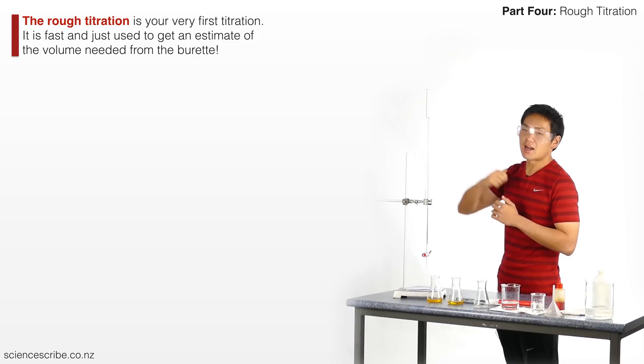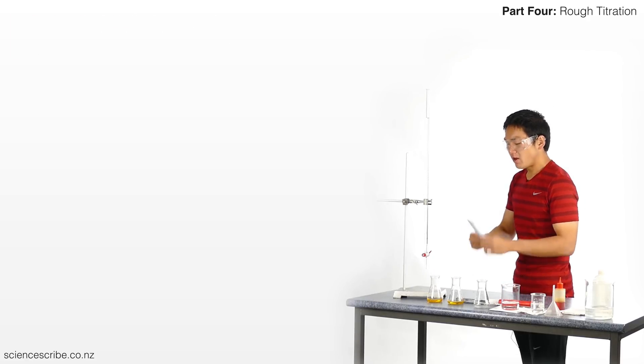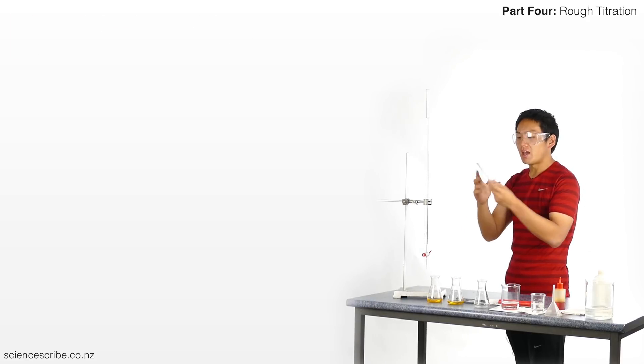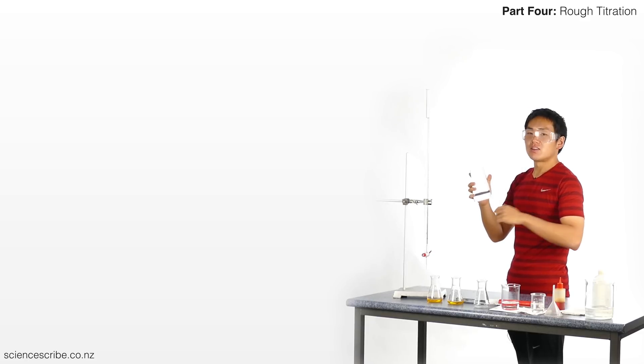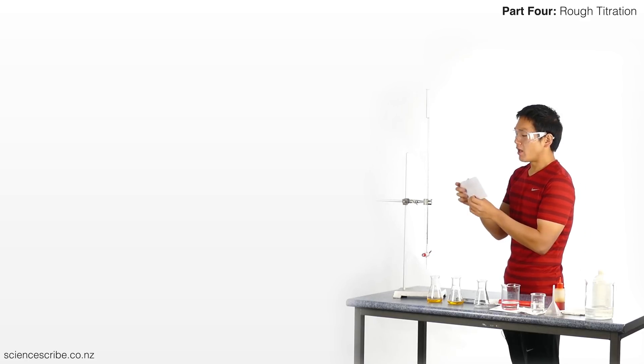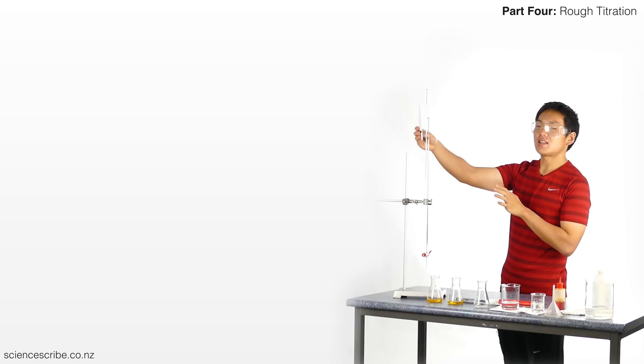Let's go ahead and start reading off our burette. To do that, I have a white piece of paper, and I've also drawn a black line on the other side. The reason I do that is because if I only had a white card or white piece of paper, yes, I can see the meniscus.